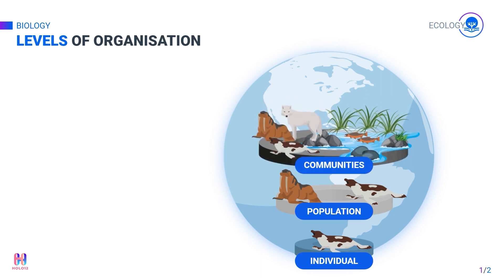The third level is community. This level includes multiple populations of different species living in an area. Here, you can see different types of species, including the population of seals, walruses, polar foxes, and fish, all living in the sea together. All the populations together form a community.